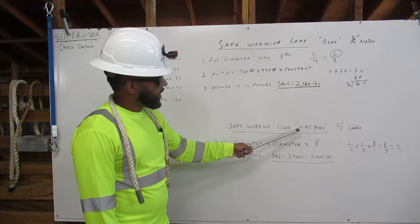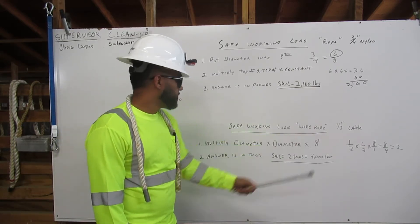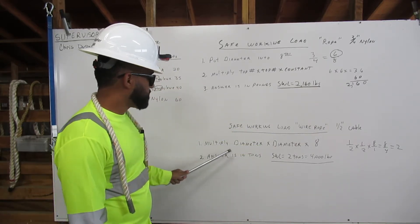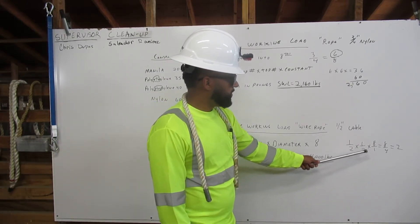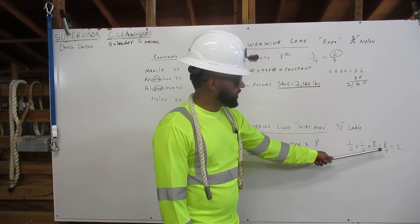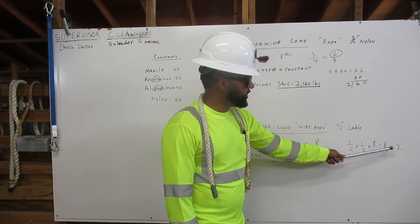Safe working load, wire rope, half-inch cable. One, we multiply diameter times diameter times eight. One-half times one-half times eight over one equals eight over four, which equals two.